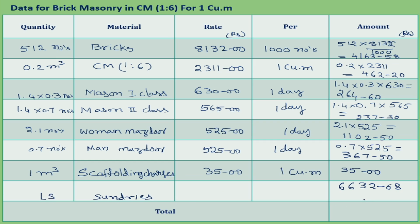Adding all amounts, the total comes to approximately 6640 rupees. Therefore, the brick masonry cost is 6640 rupees per cubic meter.